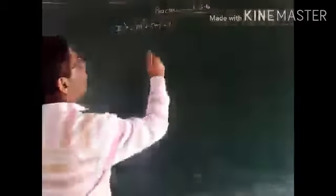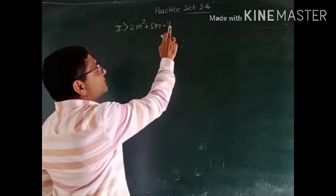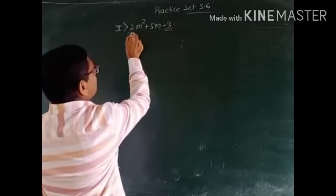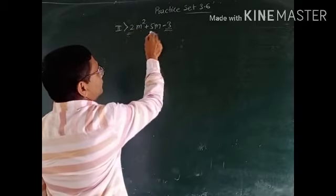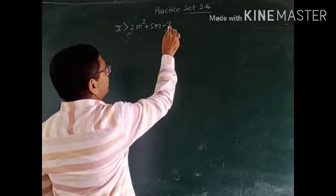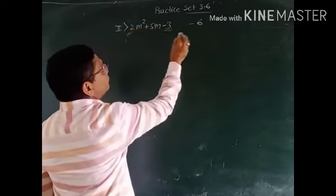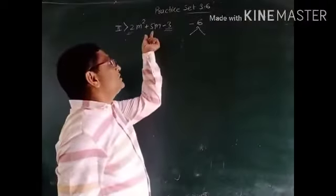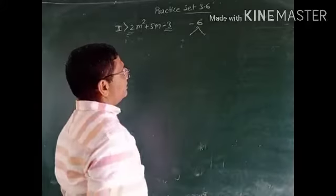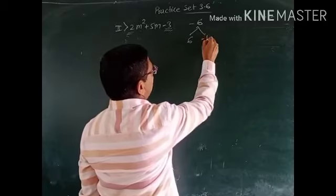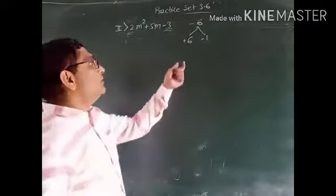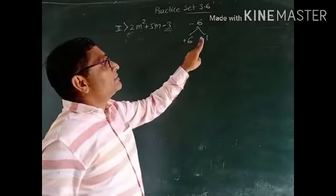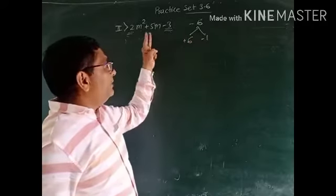Now see the second example. It is also in the form of am² + bm + c. Therefore, we will write the product of the constant number and the coefficient of the square term, which is -6. We have to find the factors of -6 such that their sum is +5 and their multiplication is -6. I think +6 and -1 will be the factors: 6 × 1 = 6, and with signs negative and positive the product is -6, while +6 + (-1) = +5.